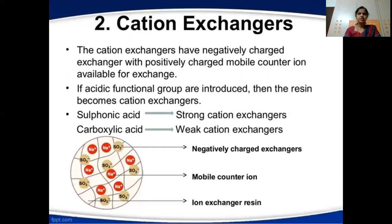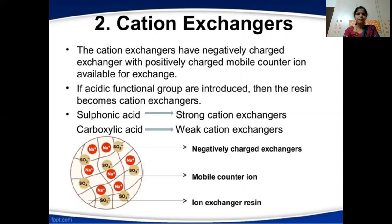Cation exchangers are exactly opposite to anion exchangers. They are negatively charged exchangers — the resin carries SO₃⁻ as the charged group, and the mobile counter ion associated with it is Na⁺ (sodium ion), which is a cation. These Na⁺ ions are exchanged with the cations present in the sample, hence the name cation exchangers. Sulfonic acids act as strong cation exchangers, and carboxylic acids act as weak cation exchangers.